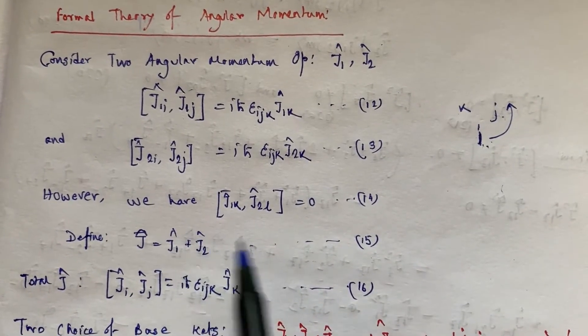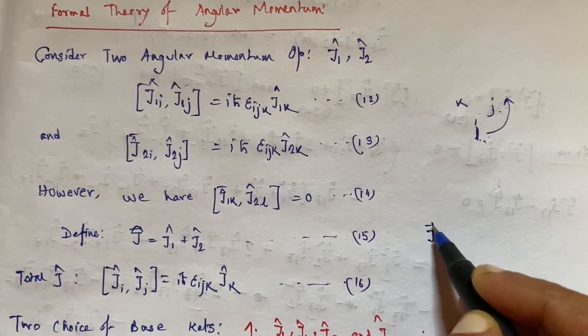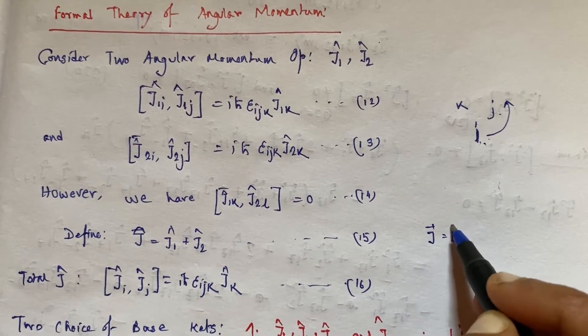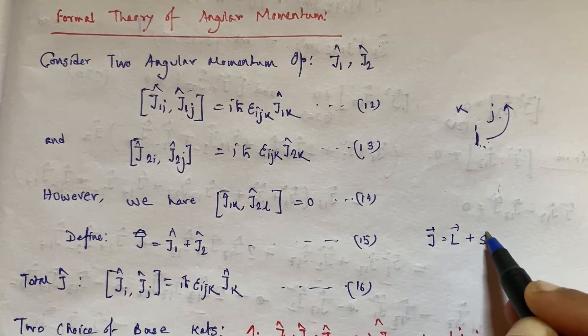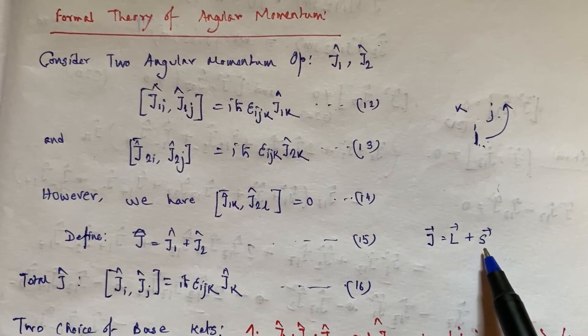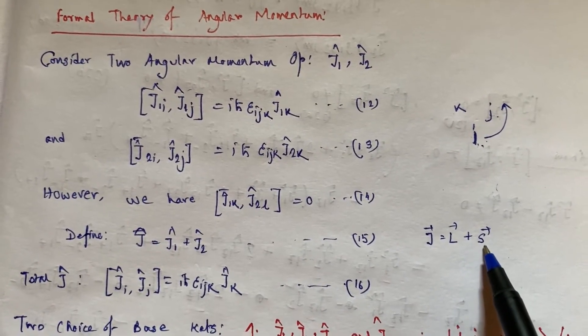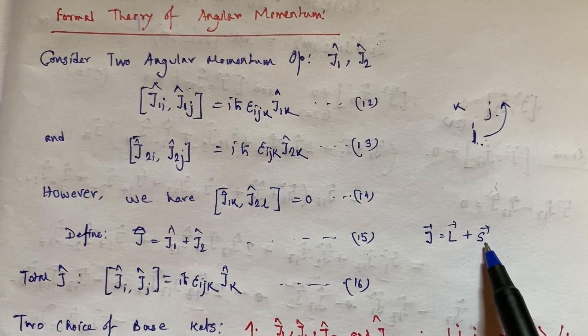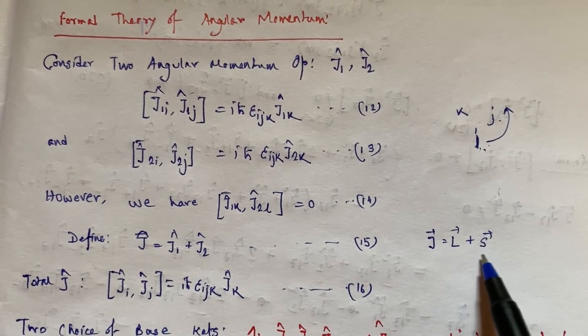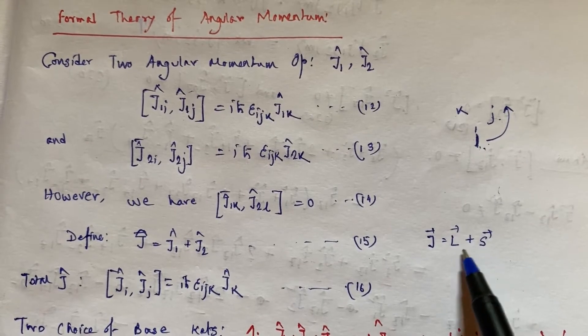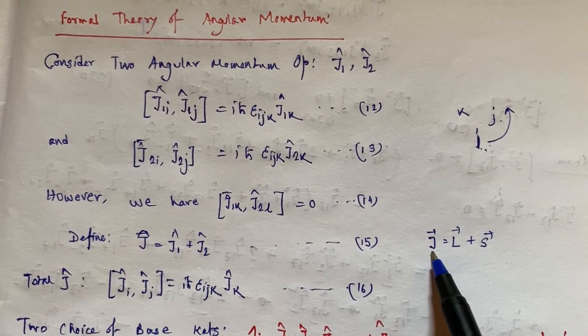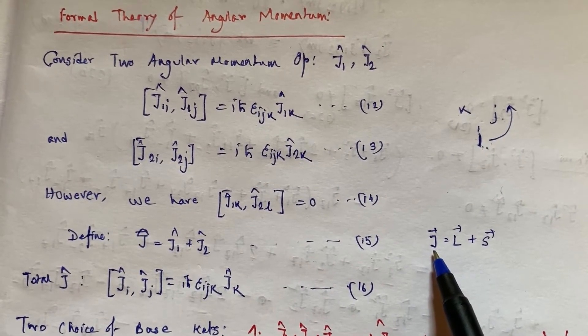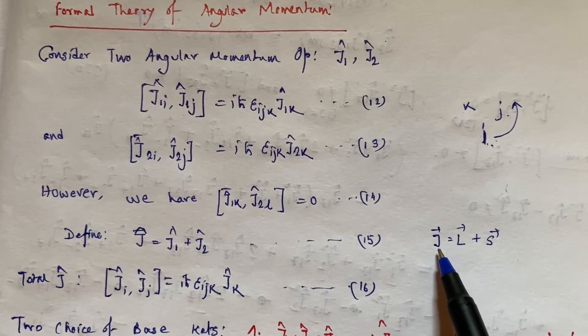And this J is equal to, for a quantum mechanical system, orbital angular momentum L and the spin angular momentum, which is the intrinsic angular momentum of the system. These two angular momentums will combine and give us J, and this J is called the total spin of the system.